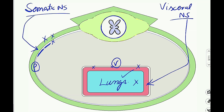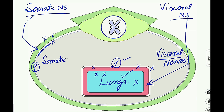Note: parietal pleura nerve supply goes with the body wall — its sensations include pain, touch, temperature, heat, and cold. The visceral nervous system will supply the lungs along with the visceral pleura. So visceral pleura nerve supply goes with the visceral nervous system, and its sensations are those of the lungs, affected by visceral stimuli. The visceral nervous system supplies the viscera via peripheral nerves known as visceral nerves, and the somatic nervous system supplies the body wall via somatic nerves.